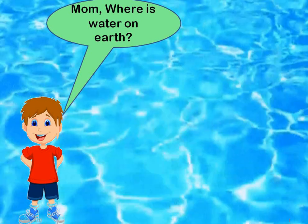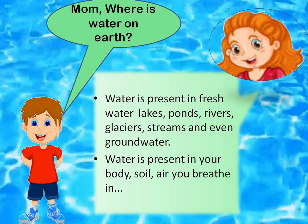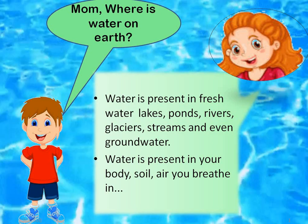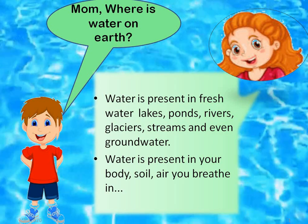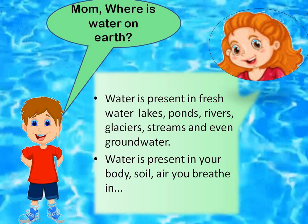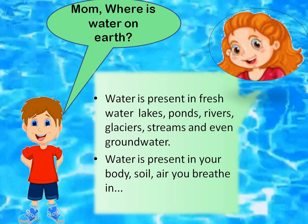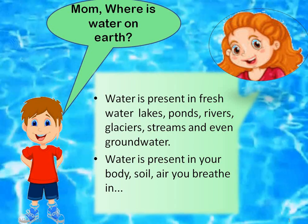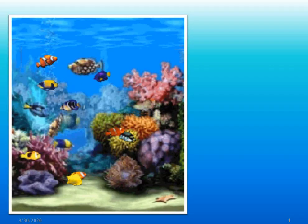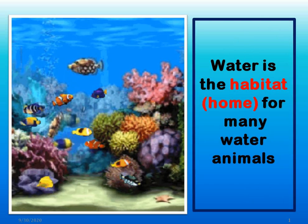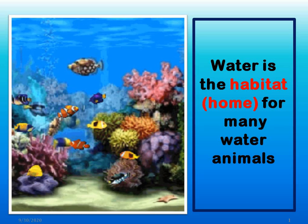Mom, where is water on earth? Where can I find water? Well, Aryan, water is present in fresh water lakes, ponds, rivers, glaciers, streams, and even ground water. You know the water which is present in the ground? Also, water can be present in your body. It's in the soil and it's also in the air you breathe in. And you know, water is the habitat — habitat means home — for many water animals.